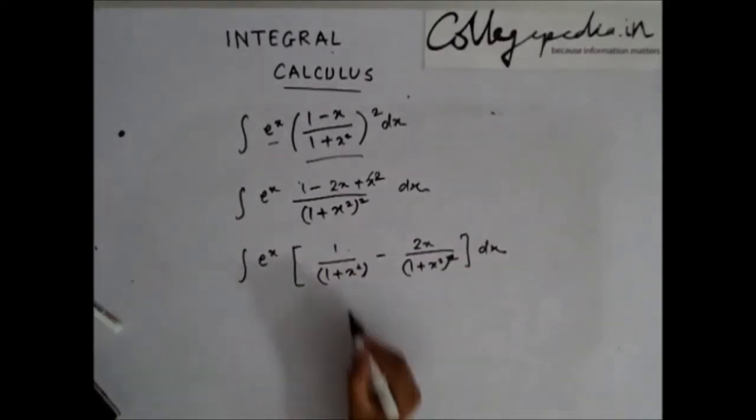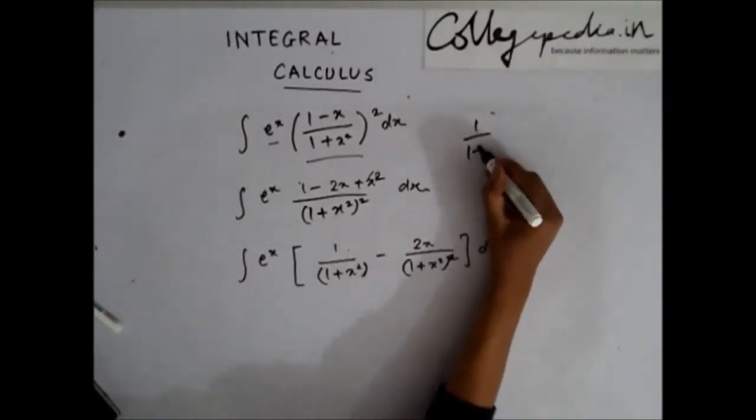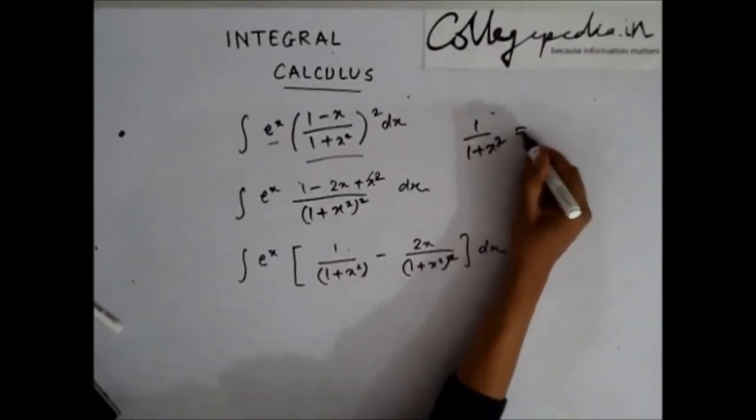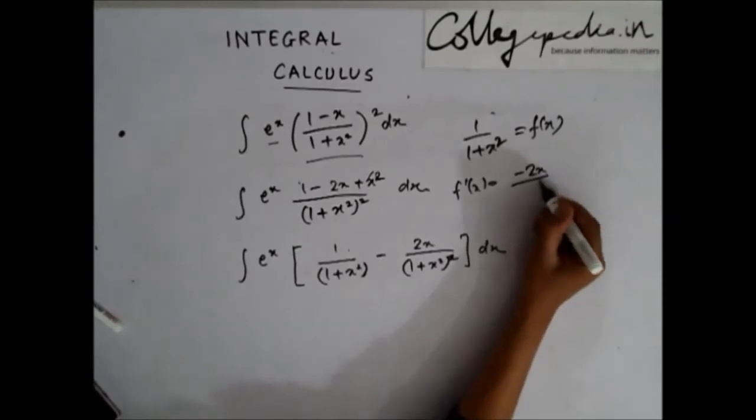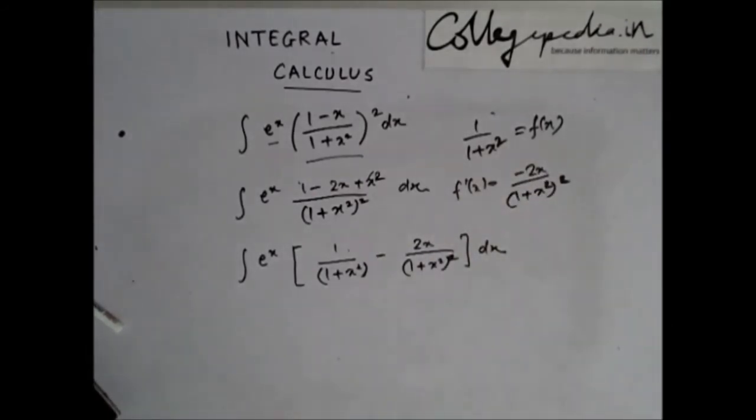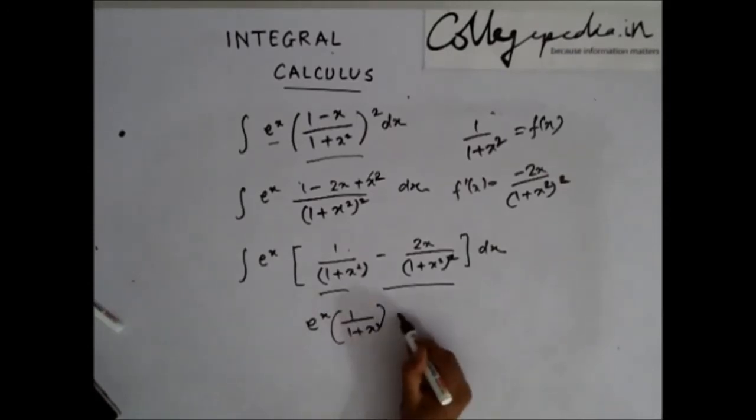Now, if I take 1/(1 + x²) as my f(x), my f'(x) is -2x/(1 + x²)². So, if this is f(x), this is f'(x). So, this is of the form which we had discussed earlier. So, my answer is directly e^x/(1 + x²) + c. So, this is my solution.